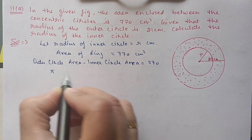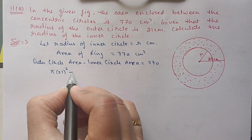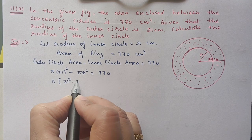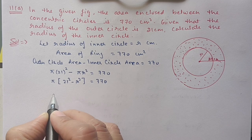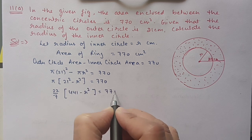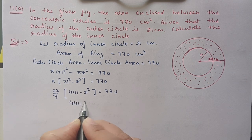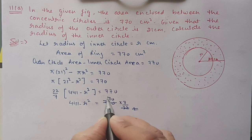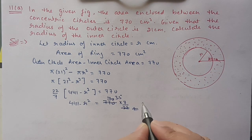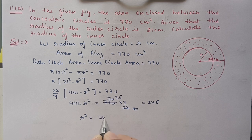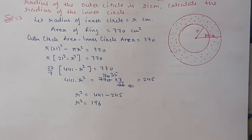Setting up the equation: π(21)² − πr² = 770. Taking π common: π(441 − r²) = 770. Substituting π = 22/7: (22/7)(441 − r²) = 770. Shifting 22/7 to the other side: 441 − r² = 770 × 7/22. Canceling gives 245, so 441 − r² = 245. Therefore r² = 441 − 245 = 196, giving r = 14 centimeters.